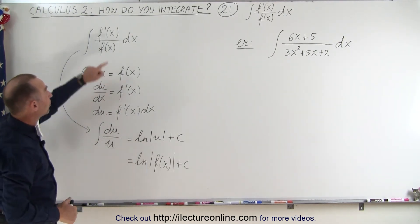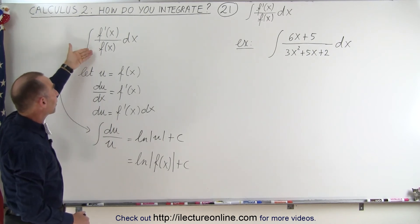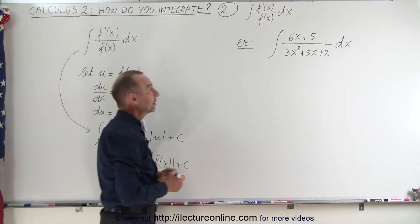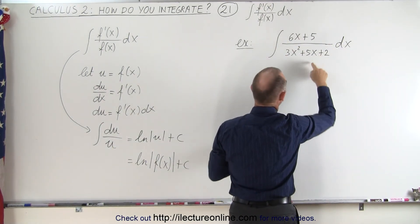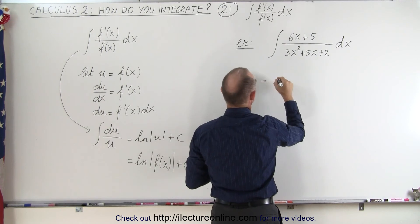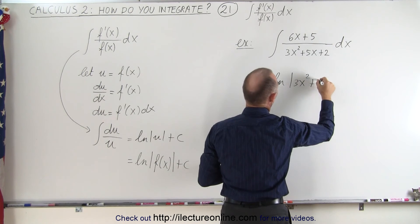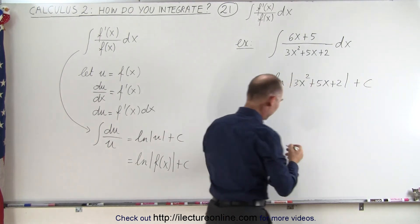So in other words, if the numerator is the derivative of the denominator, the integral of that is simply the natural log of the function. So as an example, let's do that here. Here we can say that we have the numerator, which is the derivative of the denominator. So therefore this is equal to the natural log of the denominator, which is 3x squared plus 5x plus 2 plus a constant of integration.